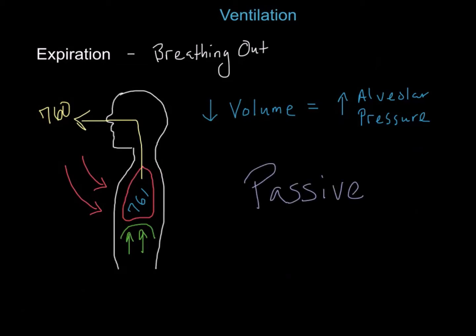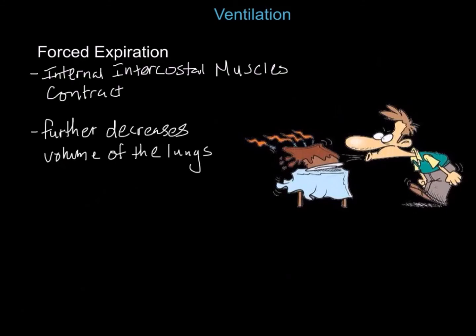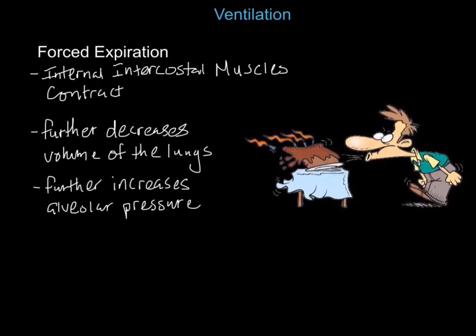Expiration is a passive process because it requires only the relaxation of the external intercostal muscles, the diaphragm, and gravity to reduce the size of the chest cavity and lungs. Forced expiration is not a part of normal ventilation — it is a process that forcefully moves air out of the lungs. During forced expiration, the internal intercostal muscles contract, further decreasing the volume of the lungs, further increasing the alveolar pressure, and forcing more air out. A good example of forced expiration is blowing out candles or blowing up a balloon.